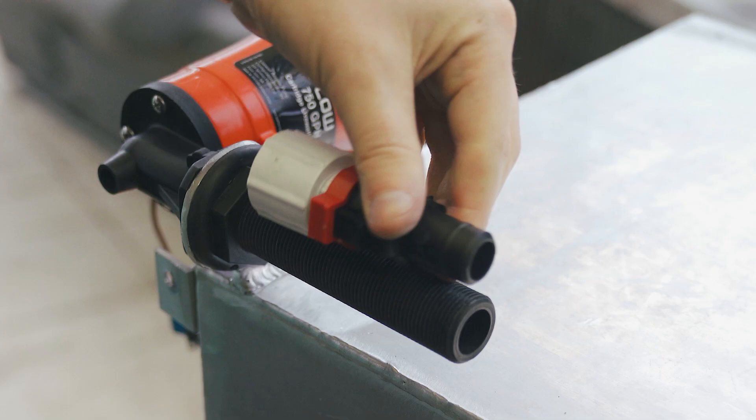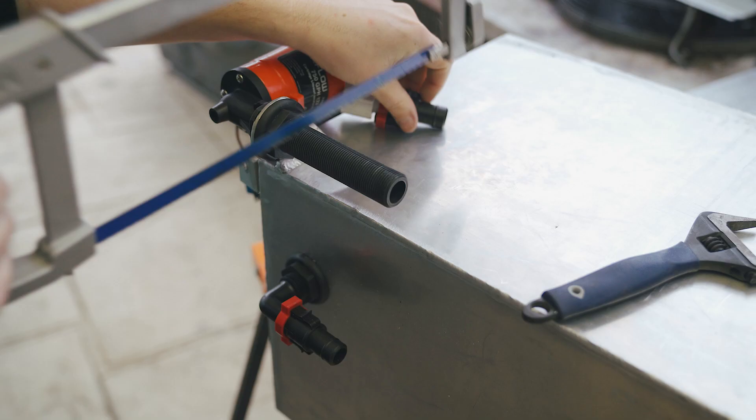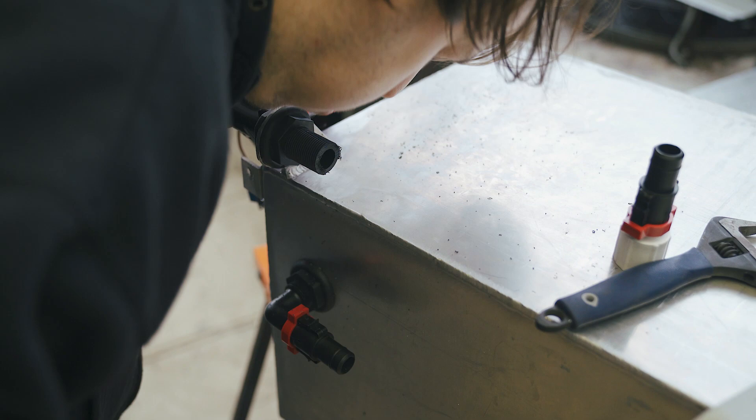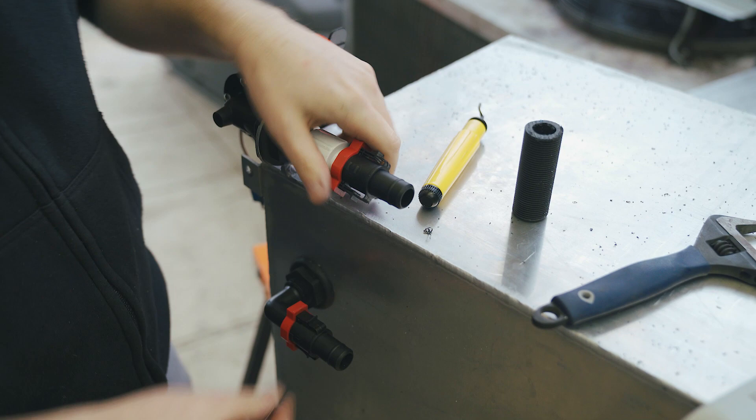I suppose I should mention that I'm using quick lock fittings to connect the hoses to the plumbing components. The quick lock system is great, as you can very easily disconnect and reconnect without the need of any tools. This is particularly helpful if you need to troubleshoot the system whilst out on the water.